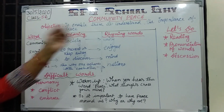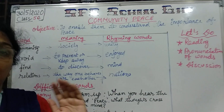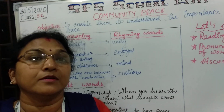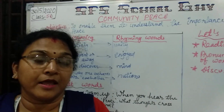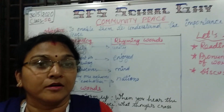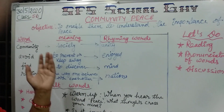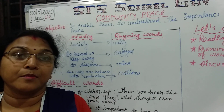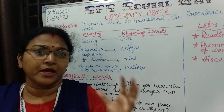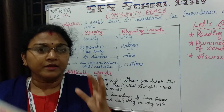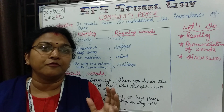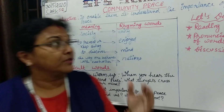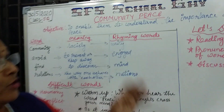What does the word community mean basically? It is about a group of people who are living in a particular area with brotherhood where they are having good relations. And peace means where we need calmness, quietness, where there should not be any war, no conflict — only persons who love to live with each other in a very friendly manner. So that is what the topic of our poem is all about.